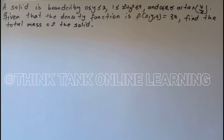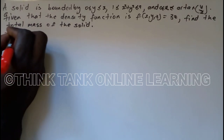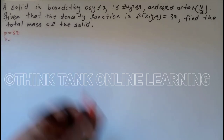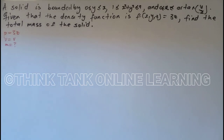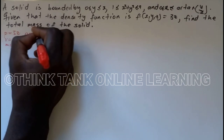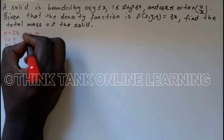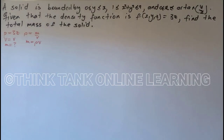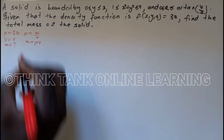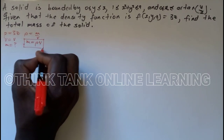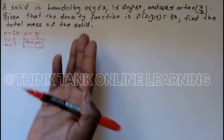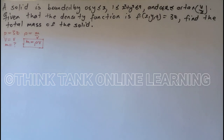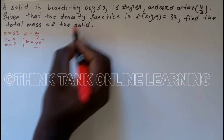We need to find the total mass of the solid. We're given the density which is 3z. From science, density equals mass over volume, so mass equals density times volume. We're going to use the same technique here, but in this case our volume is not directly given — we're going to find it. It's not that hard but it's a bit of a process.